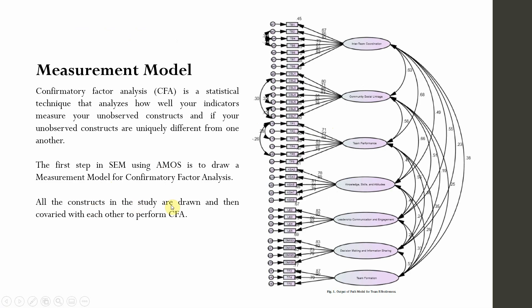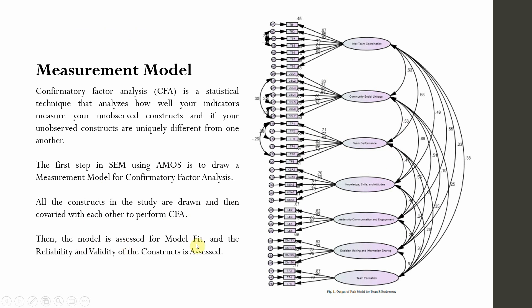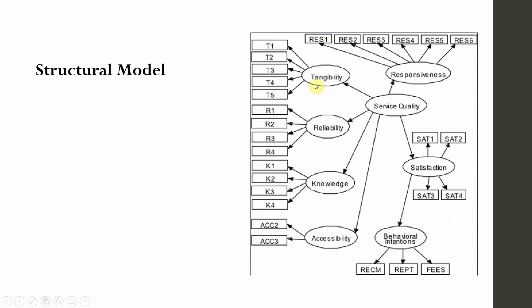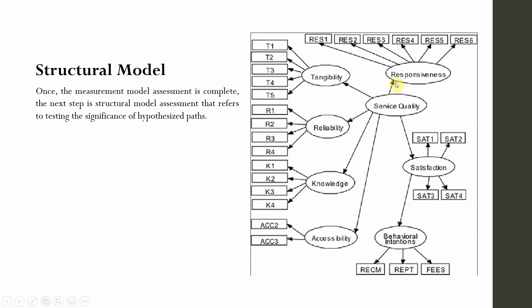So the first step in SEM using AMOS is to draw a measurement model for confirmatory factor analysis. All the constructs in the study are drawn and then co-varied with each other to perform CFA. CFA is performed by adding all the constructs in the study — whether exogenous, endogenous, independent, dependent, moderating, or mediating — onto the drawing canvas, and then they are co-varied. Then the model is assessed for model fit, reliability, and validity. Once you have adequate model fit and have established reliability and validity, the next step is your structural model where you test your hypothesized paths.